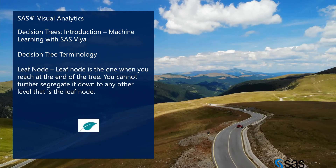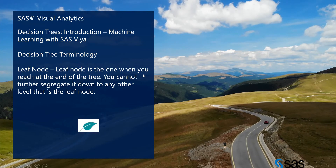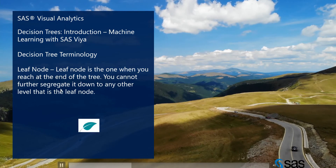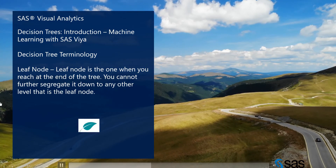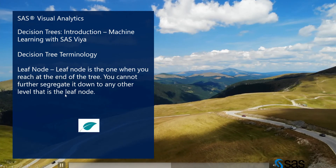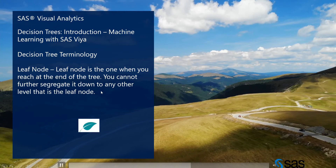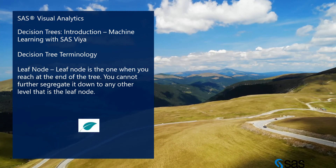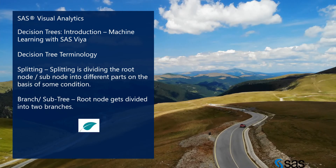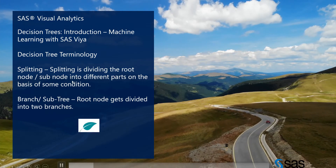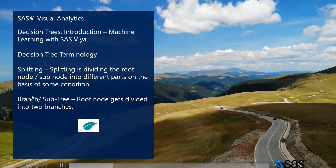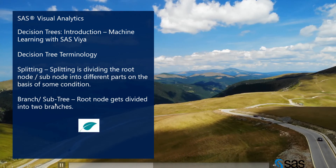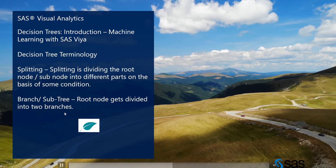Next is the leaf node. A leaf node is reached at the end of the tree where you cannot further segregate it down to any other node — it is the end of your tree and you cannot go further from there. After that, splitting: splitting is dividing the root node or sub-node into different parts on the basis of some conditions. A branch or subtree is when the root node gets divided into two branches.